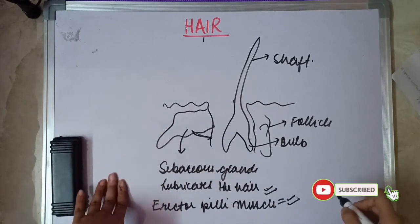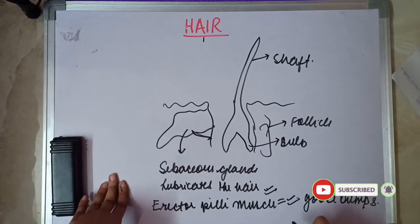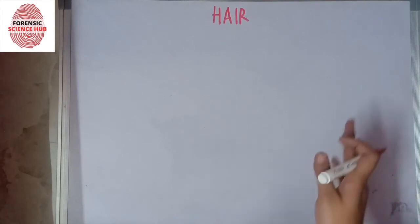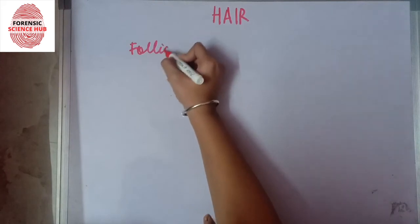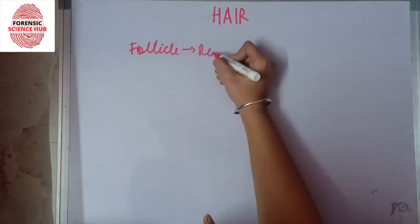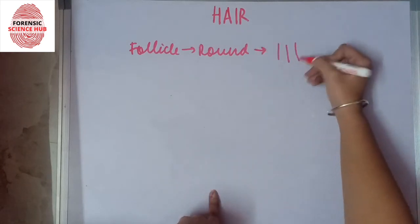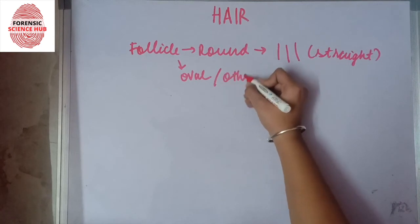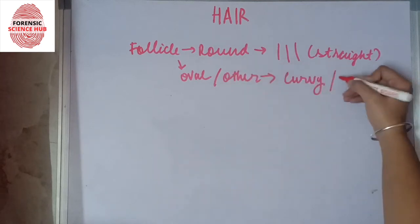We also have the erector pili muscle. This muscle is responsible for producing goosebumps — it causes your hair to stand up. On the basis of follicle shape, we can also determine what kind of hair it will be. If the follicle is round in shape, the hair will be straight. If the follicle is oval or some other irregular shape, the hair will be curvy or wavy in nature.